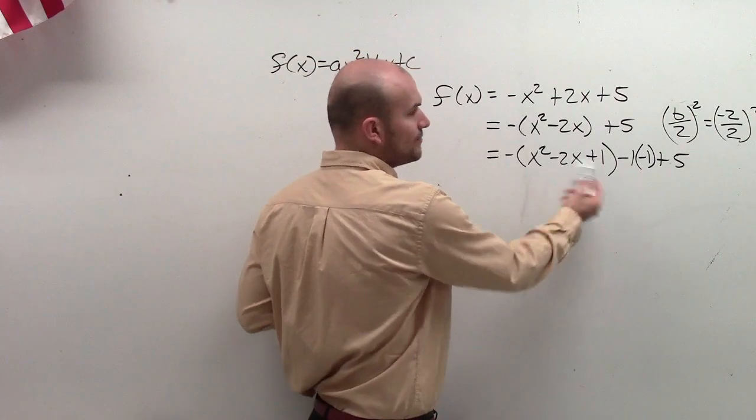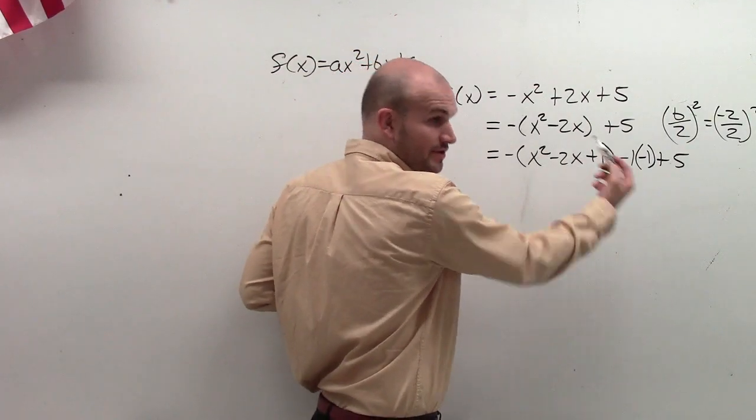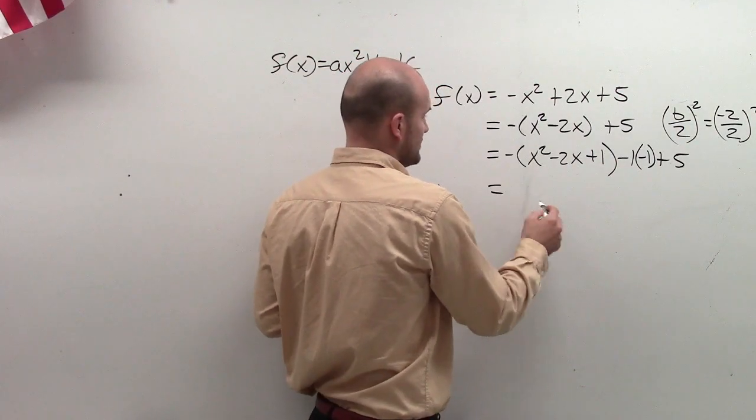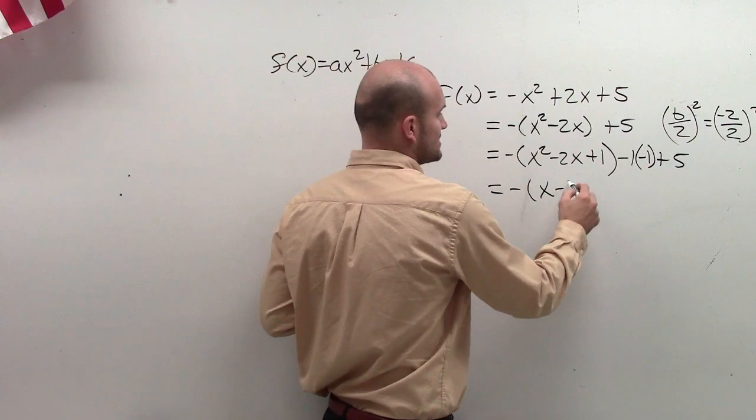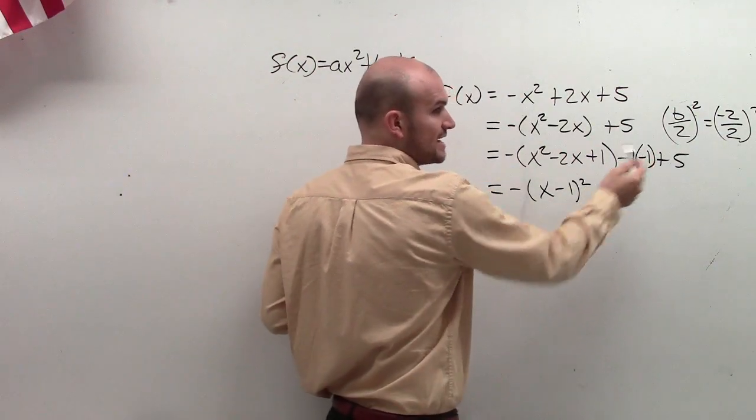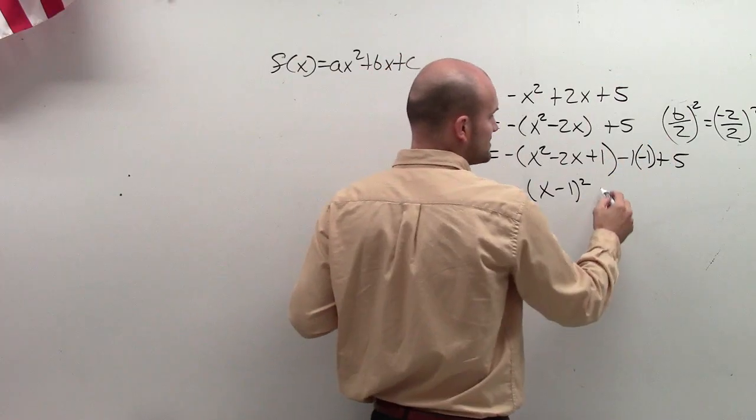Therefore, now I can rewrite this. Remember perfect square trinomials? We can rewrite as a binomial squared. So equals negative (x - 1)². Negative 1 times negative 1 is positive 1. Plus 5 is 6.